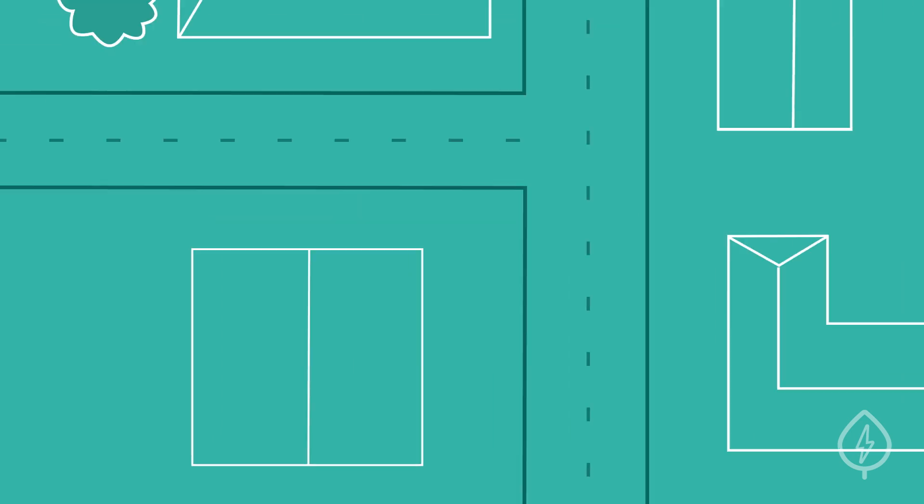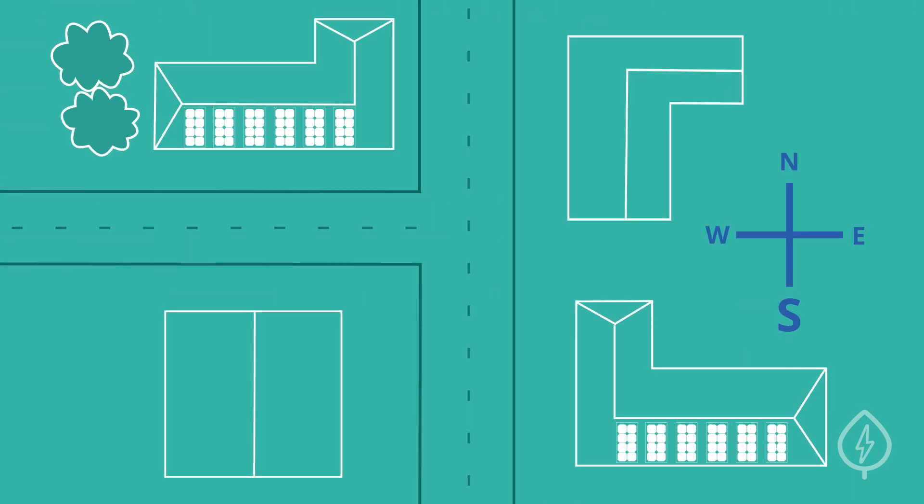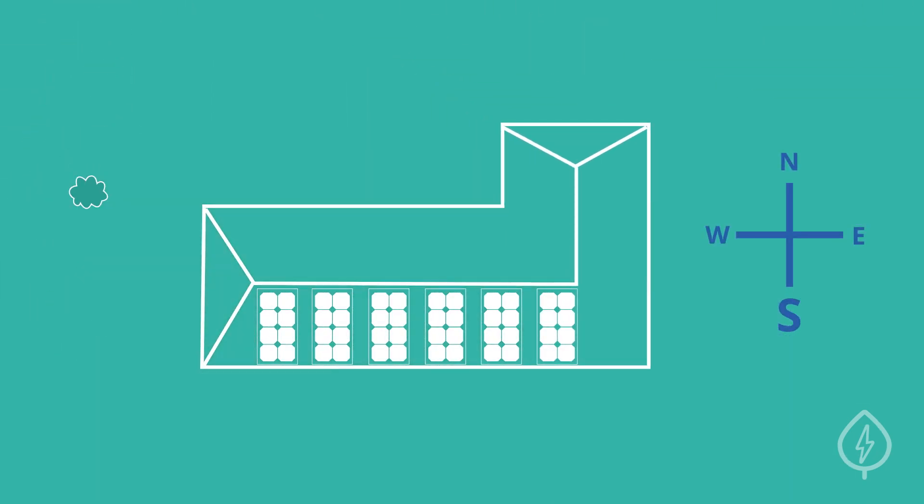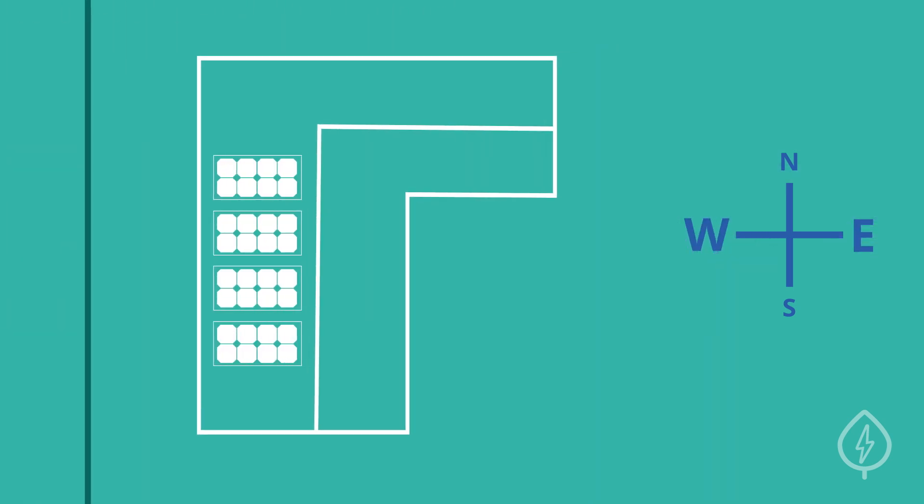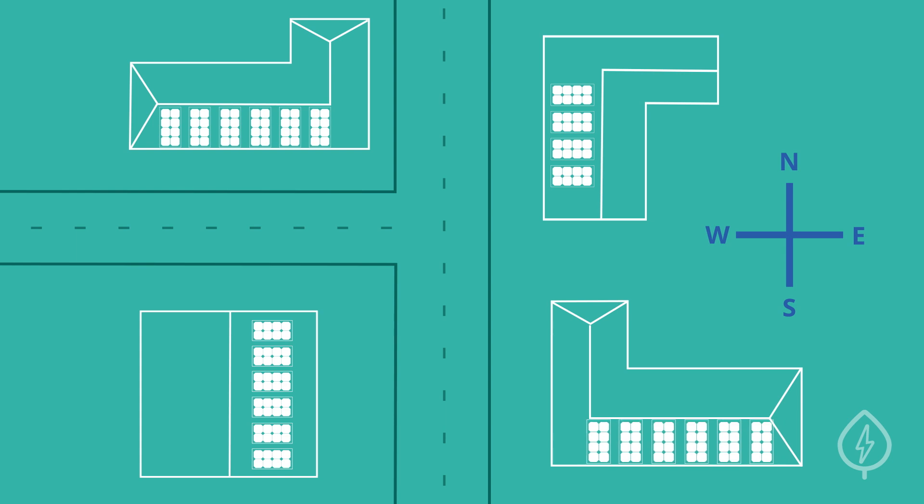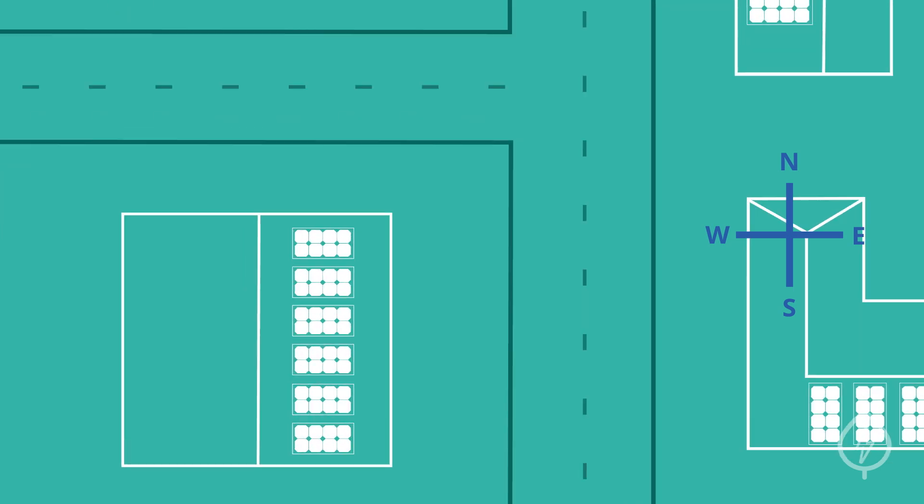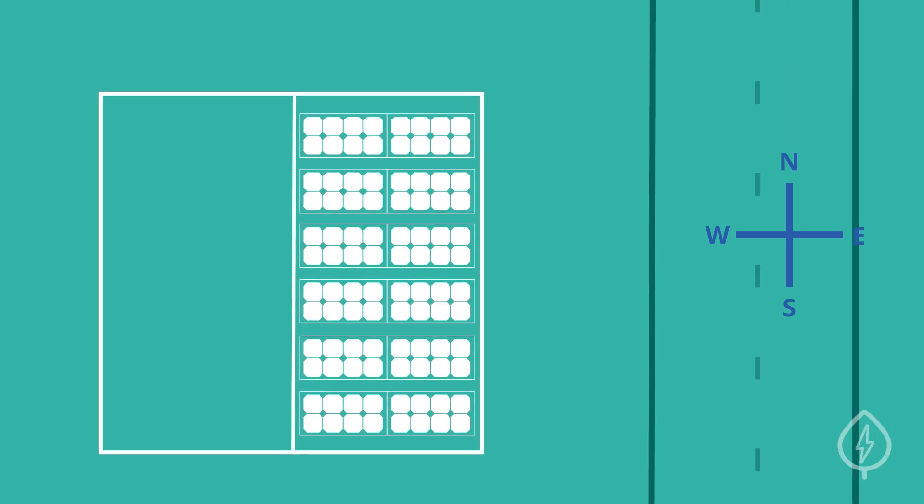Ideally, your solar panels will be installed facing south in an area with no shade, but that's not always possible. East or west-facing panels will still produce electricity, just not as much as south-facing. In that case, you might have to add extra panels to cover all of your electricity use.